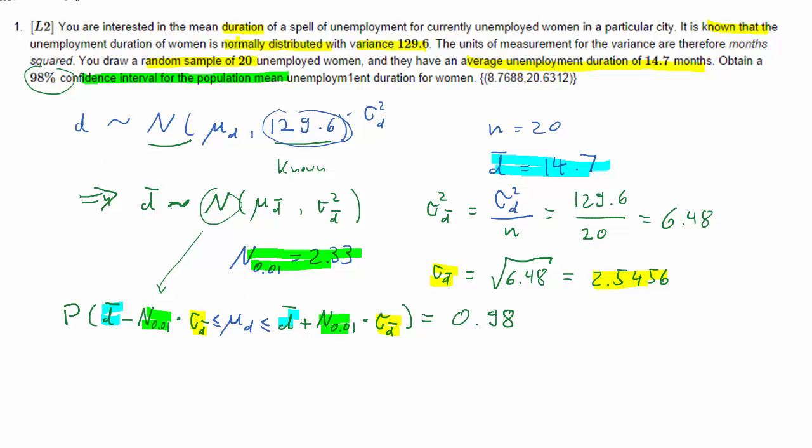Then we just plug in all these values and the result we get is that the lower bound is 8.7688 and the upper bound 20.6312. So there's a 98 percent probability that the true but unknown average duration of unemployment spells is between these two values.